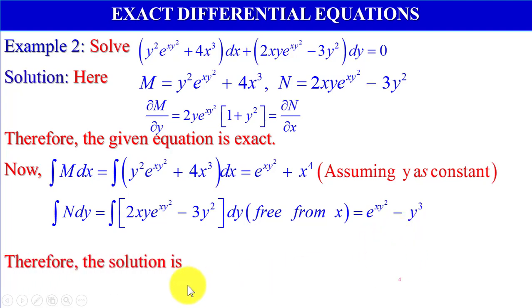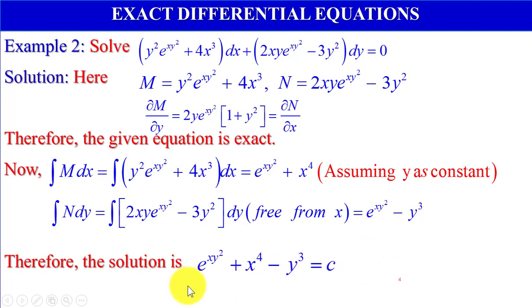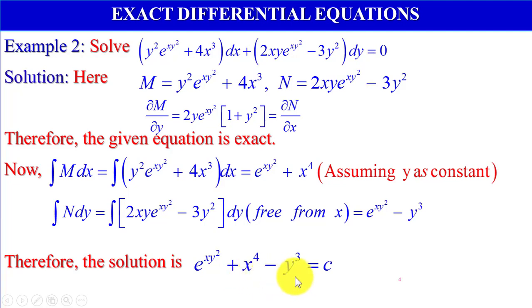Therefore, the solution is e to the power xy squared plus x to the power 4 minus y cubed equals c.